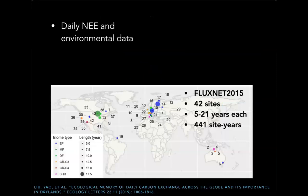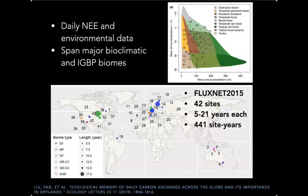We used daily NEE and micrometeorological data from the Fluxnet dataset of 42 sites, each with more than five years of contiguous data. Overall, we have over 400 site-years considered here. Some caveats: because we require more than five years of contiguous data, some sites are excluded, so the tropics and boreals are very underrepresented, although overall the sites span the major bioclimatic and IGBP types.